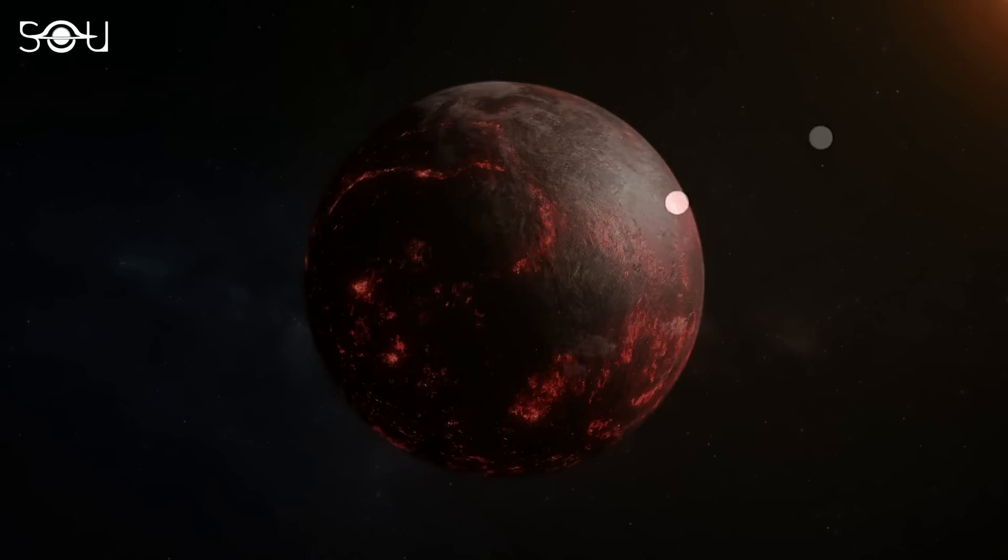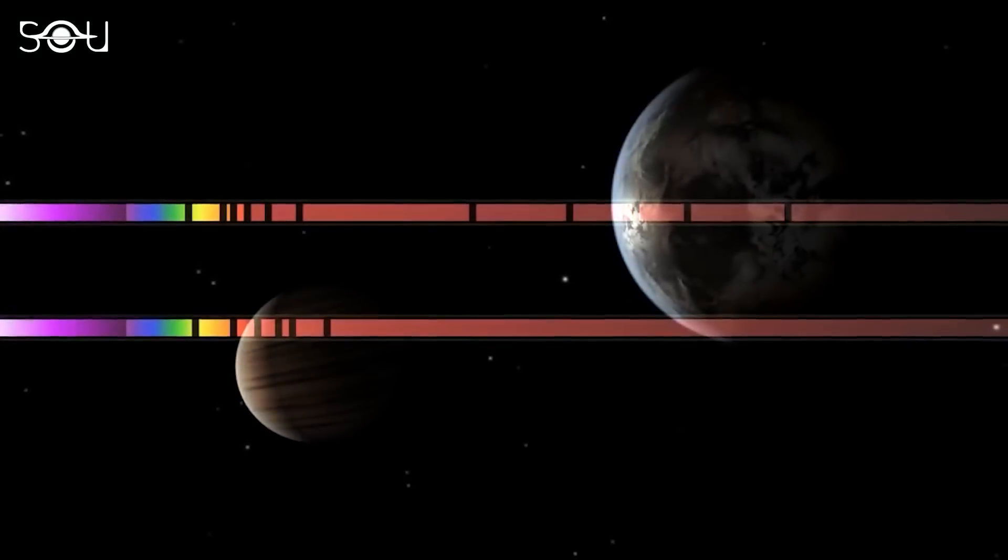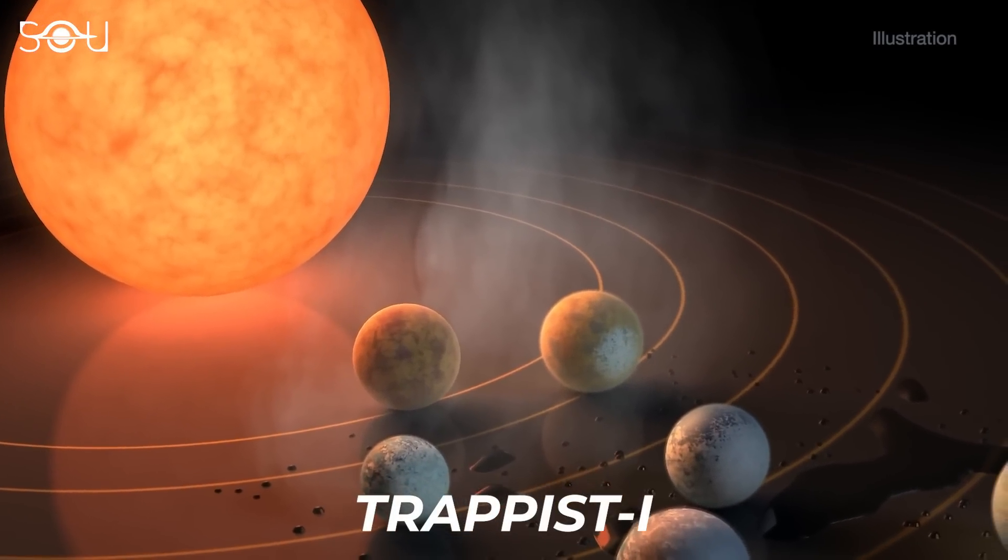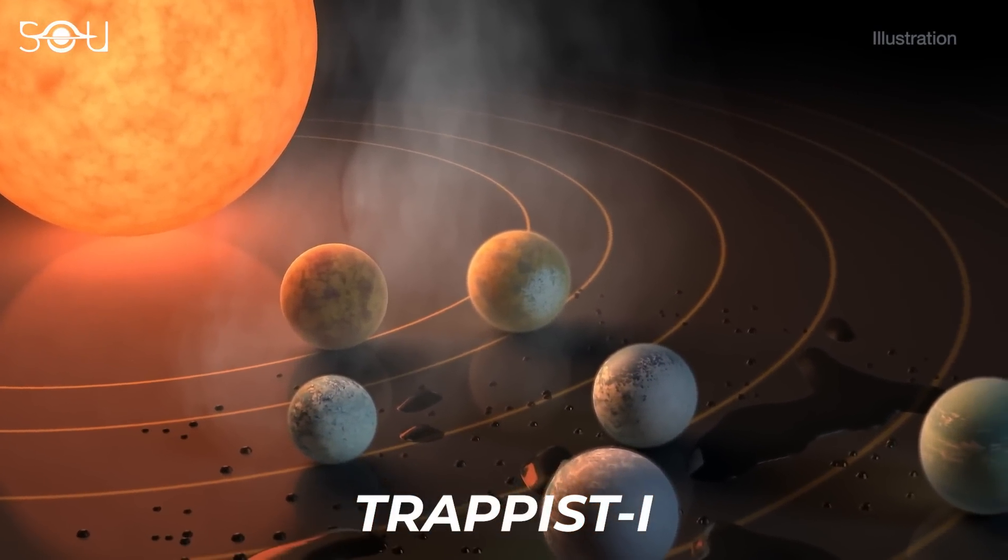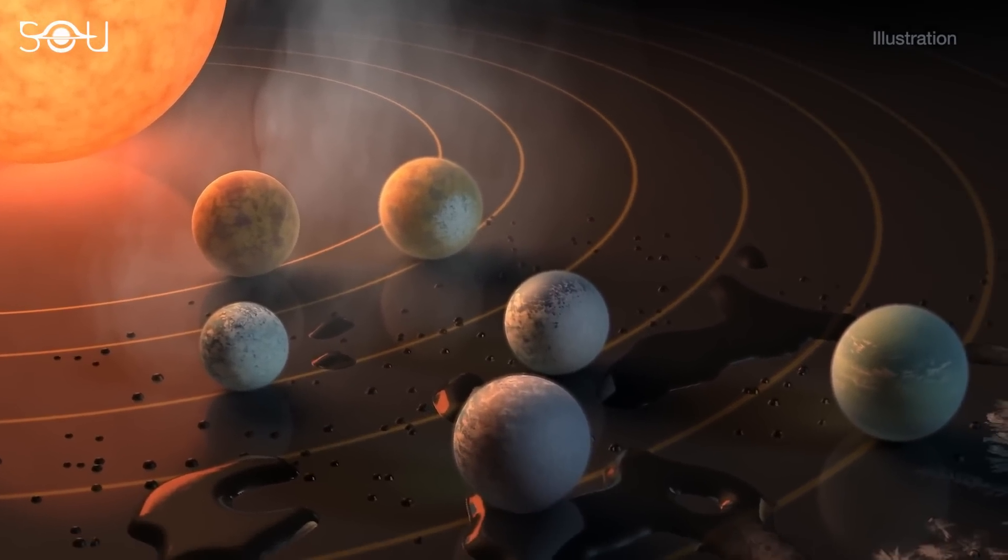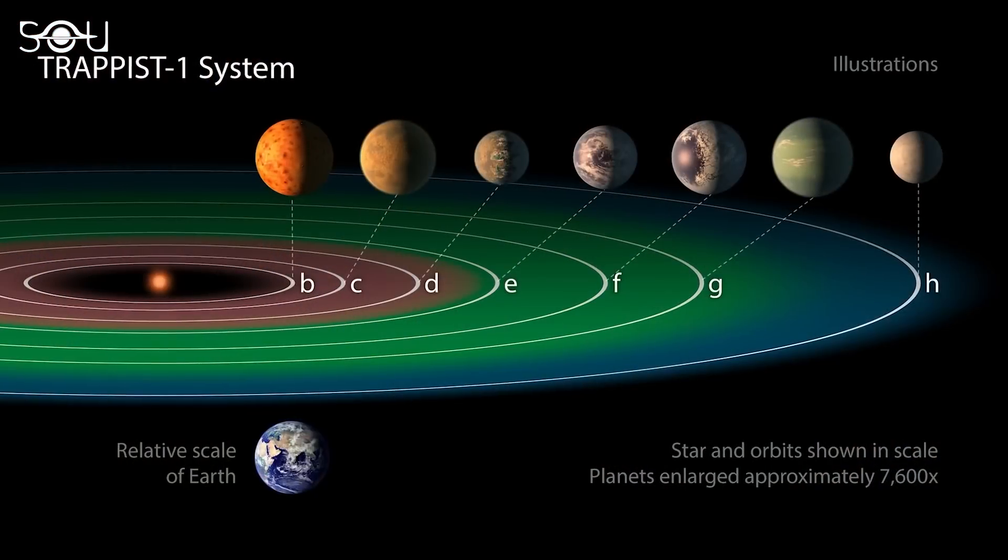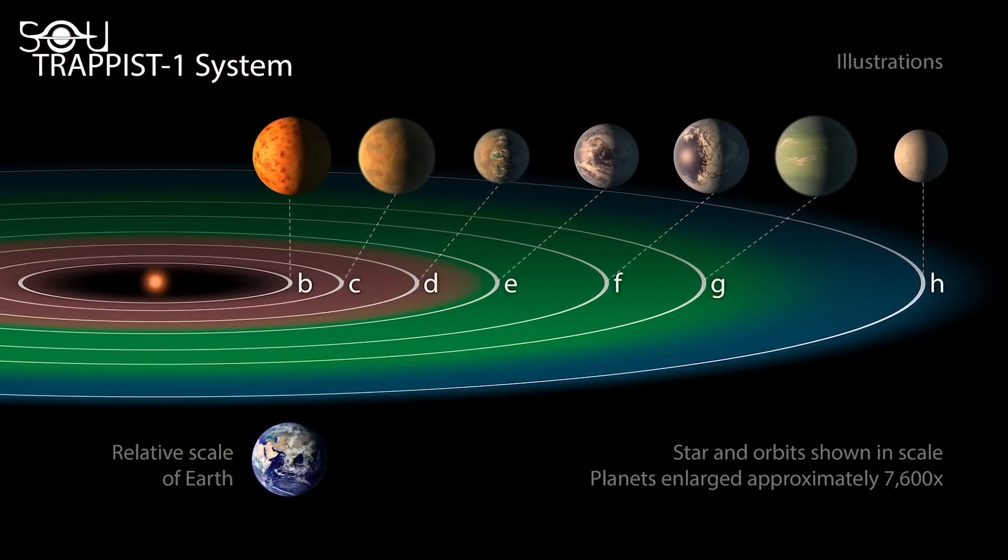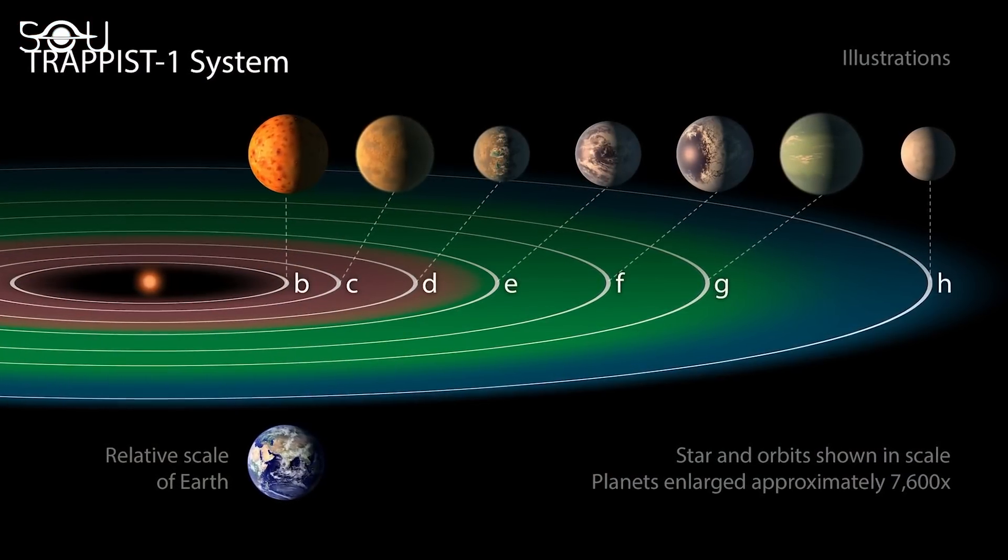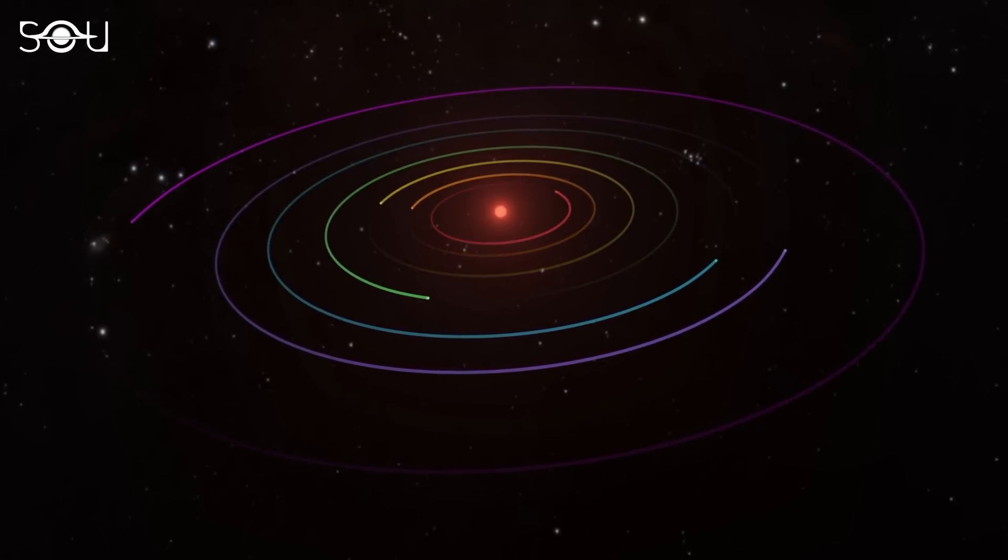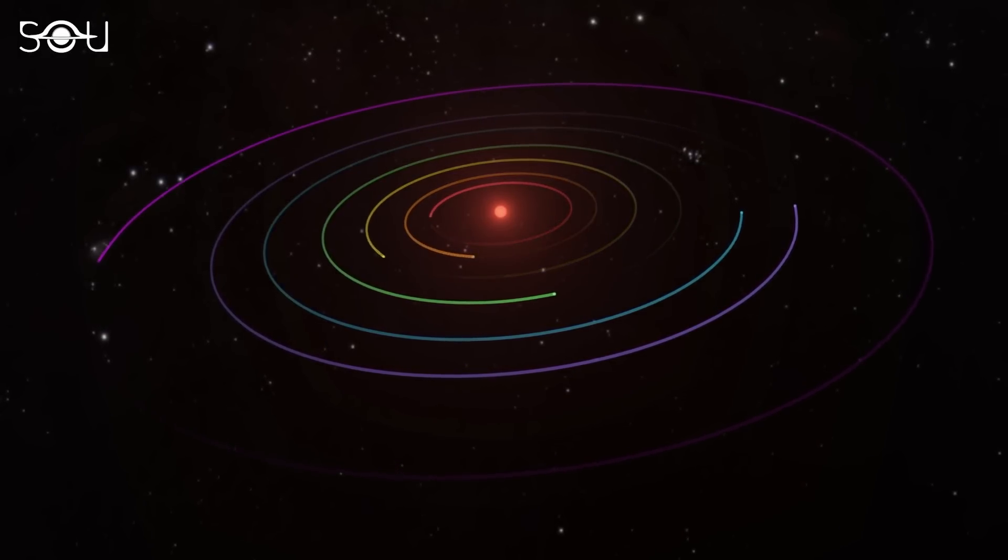In addition, Webb will perform spectroscopy of the planet's atmosphere to find the hidden details. One of Webb's most exciting planetary targets is TRAPPIST-1. It is a transiting planetary system about 40 light-years from Earth and is thought to comprise seven Earth-sized worlds orbiting a single red dwarf star.